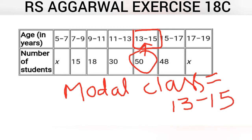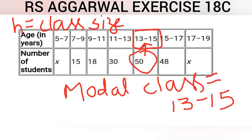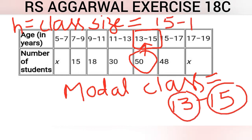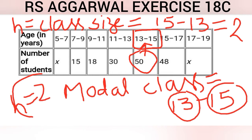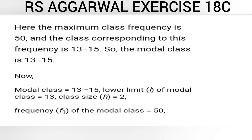In the formula for mode, we also have to calculate the value of h, which is the class size. We calculate class size as upper limit minus lower limit. If we consider the modal class, the upper limit is 15 and the lower limit is 13, so 15 minus 13 gives us 2. The value of h, the class size, is 2.